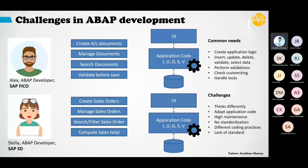Hence, there is no standardization in our applications. Due to the lack of standardization, it is hard to hand over the code when somebody newly joins the team or when somebody plans to move out. There are also different coding practices — one developer uses loop at itab into work area, another uses loop at itab into field symbols. Because of these different coding practices, it is hard for others to understand the code. All in all, everything leads to a lack of standards, making code more prone to high maintenance, less consistency, and difficult handovers whenever someone joins or leaves the team. These are the challenges we face in any typical ABAP project.